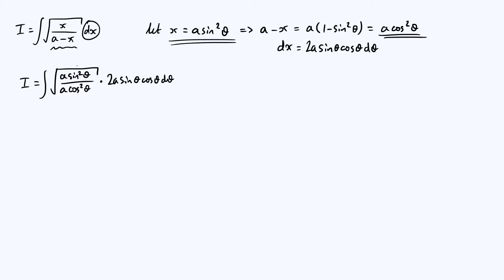We can make some simplifications. These a's cancel in the first bit, and the square root makes the squares disappear, basically. And so we end up with the integral of sine theta over cos theta times 2a sine theta cos theta d theta. Then there's a cos theta on the bottom and a cos theta on the top, so they cancel. And I'm just going to take out a constant factor of a.